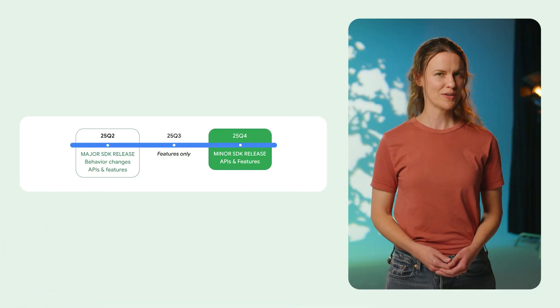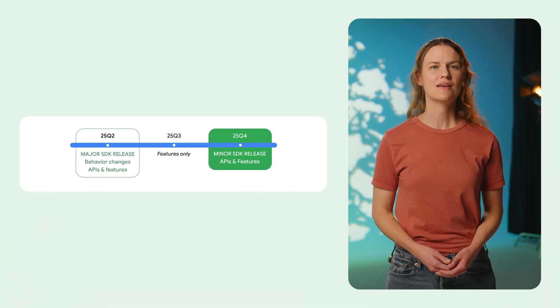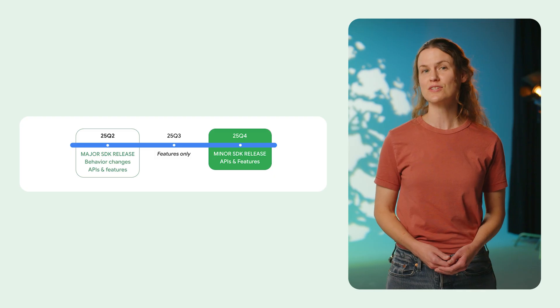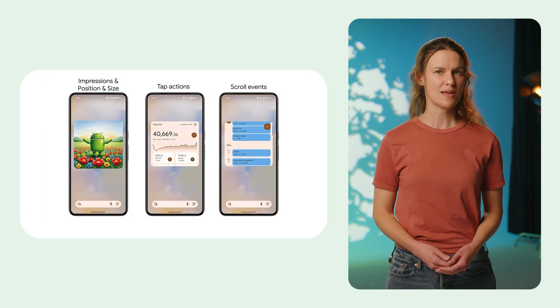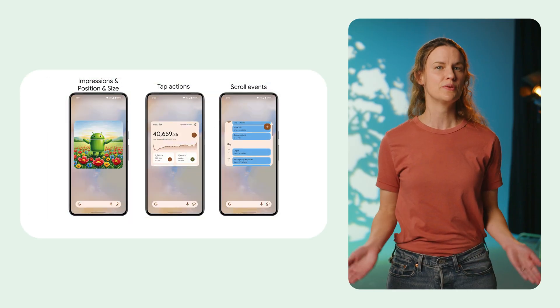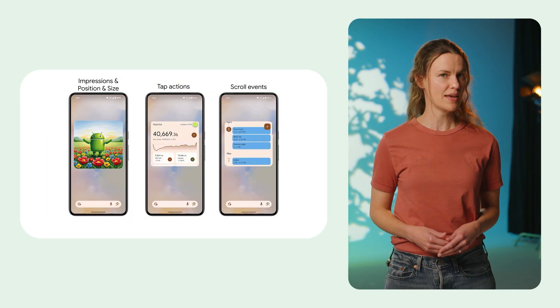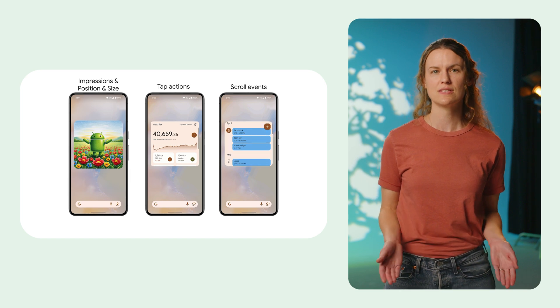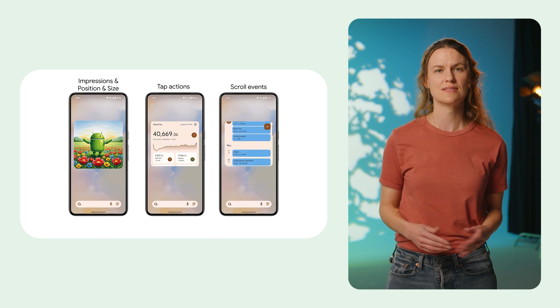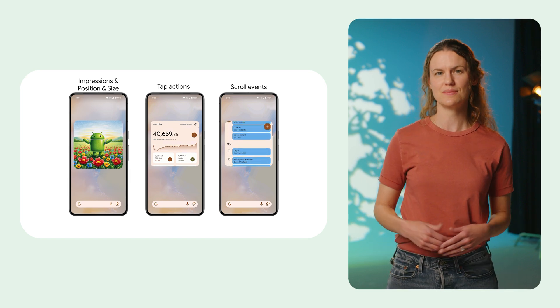Android 16 QPR 2 Beta 2 is here. This introduces a minor SDK version and new features. New widget APIs allow you to measure widget engagement like impressions, tap actions, scroll events, size, and position.